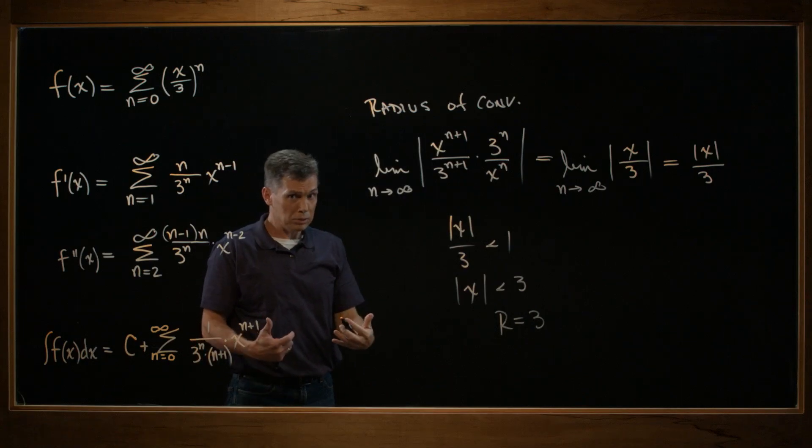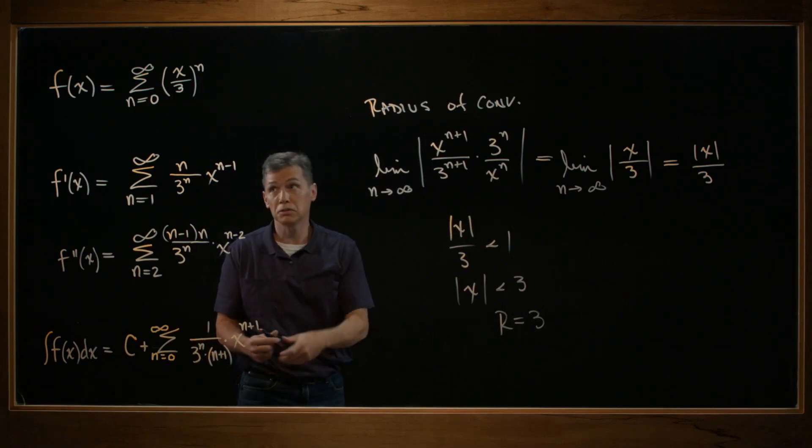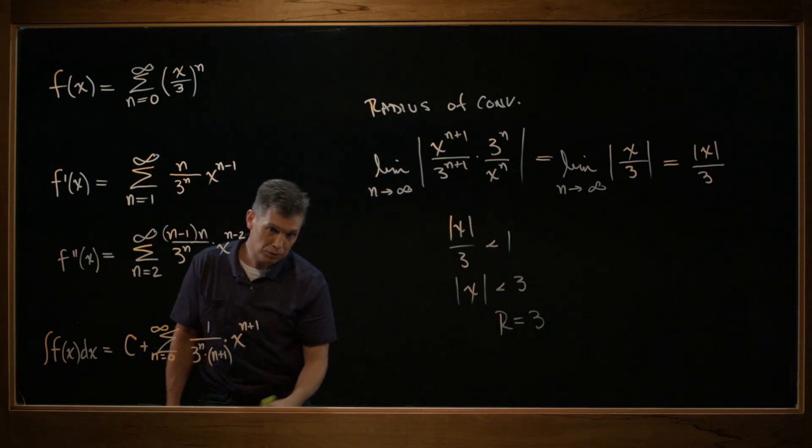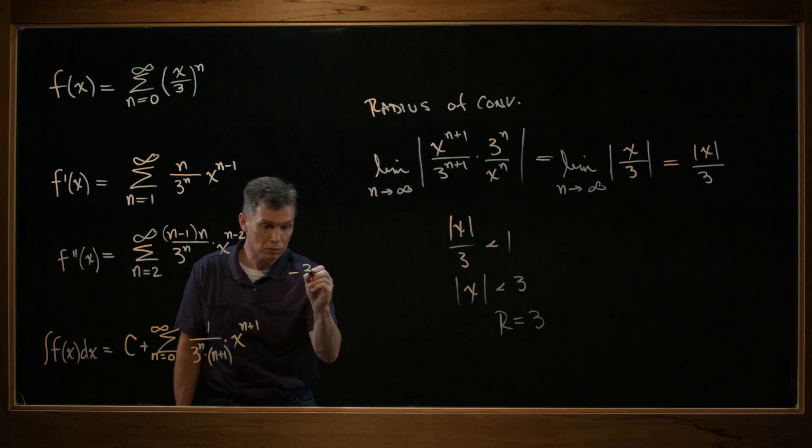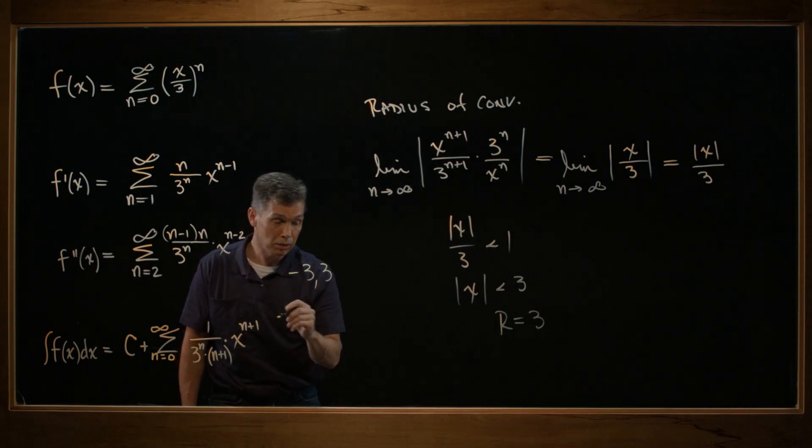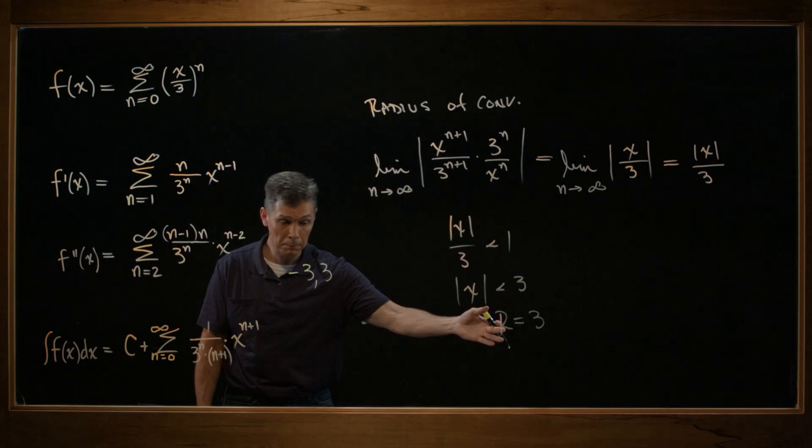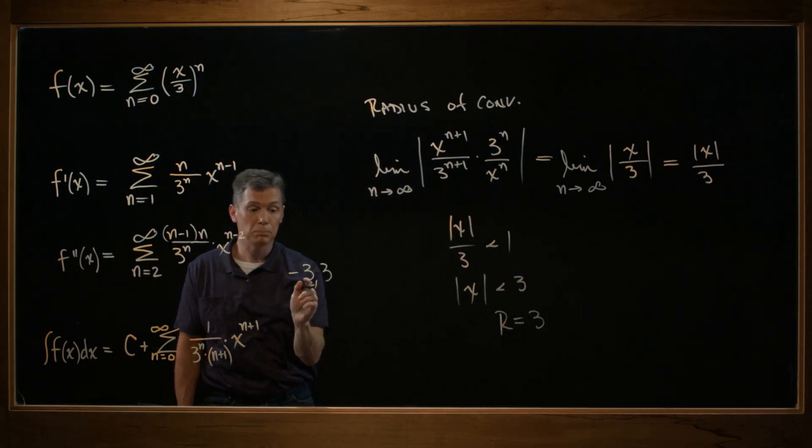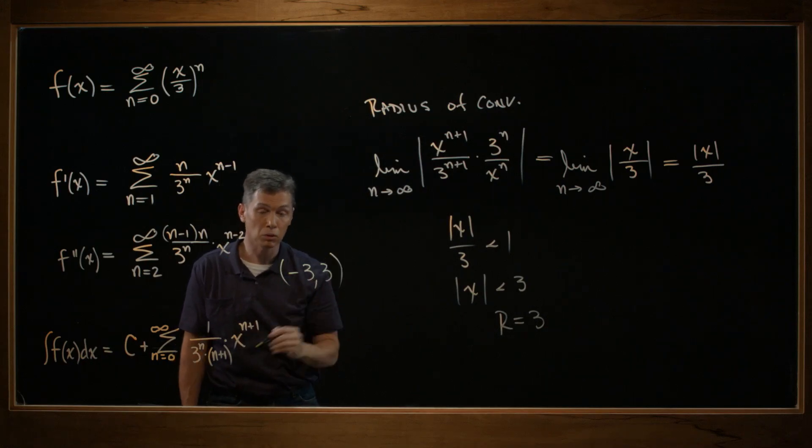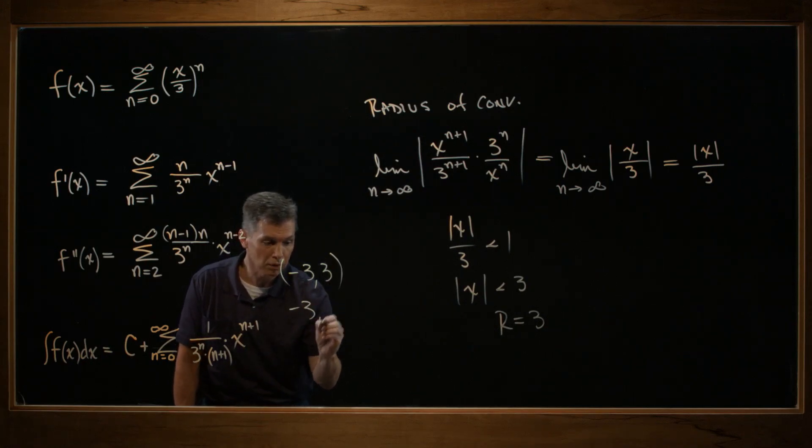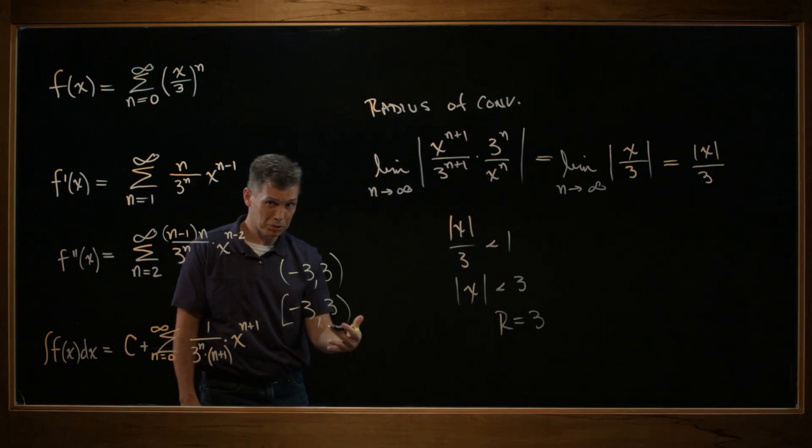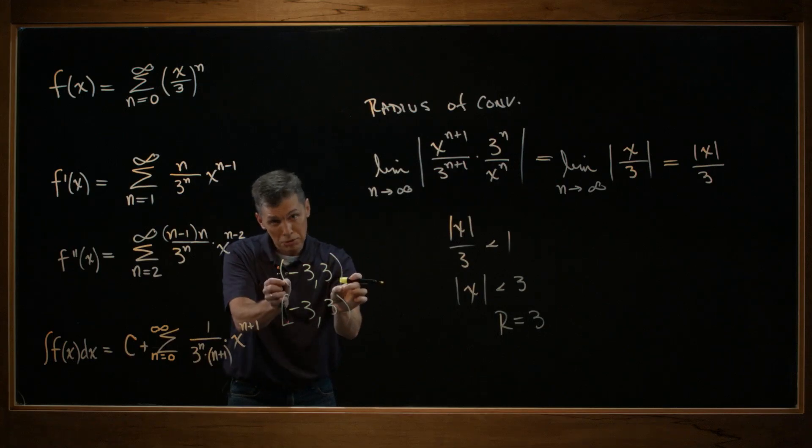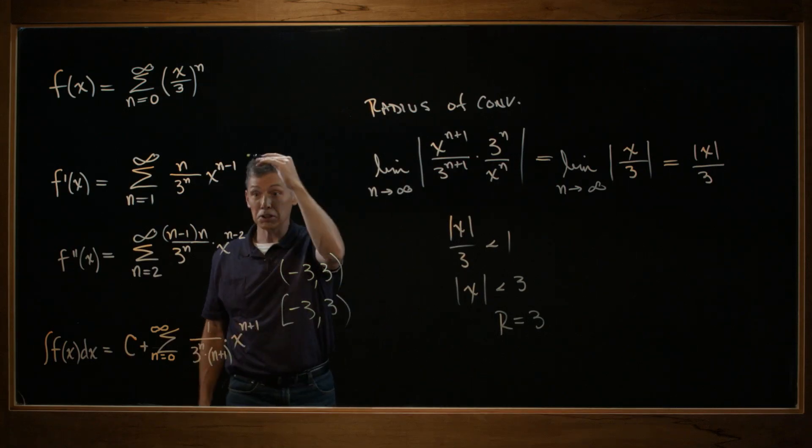And what that now means in terms of finding the interval of convergence is for each of these 4, I know the answer is something like minus 3 to 3. Right? Radius of 3. We're centered at 0. So I know the answer to each of these 4 is something like this. But there's that business of, is it open, open? Is it closed, open? Et cetera, et cetera. So we have a bit of work to do to figure out the rounded parentheses versus square braces for each of the 4.